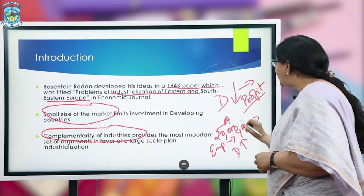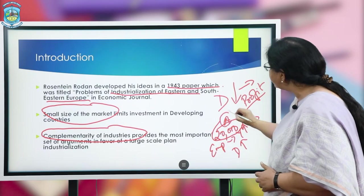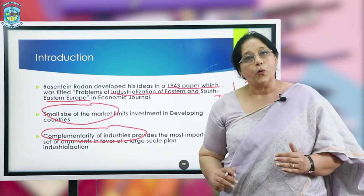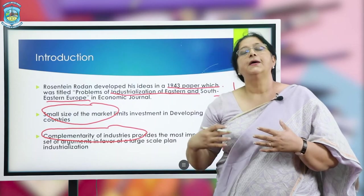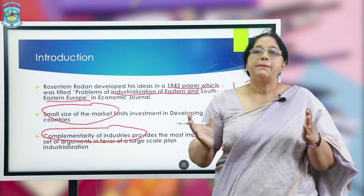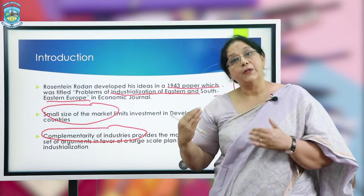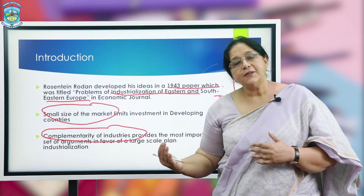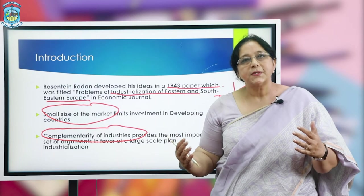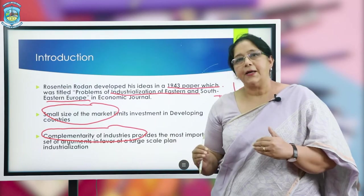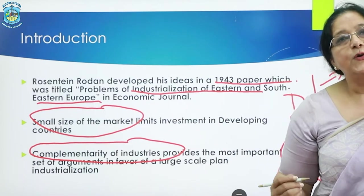But will these 20,000 labourers demand only the shoes produced by this firm? No. The demand will be a mixed demand — they will demand not only shoes, but maybe foodstuff, clothing, education — a mixed bag of goods and services. So for lack of demand, if there is just one industry, it will not be able to survive.